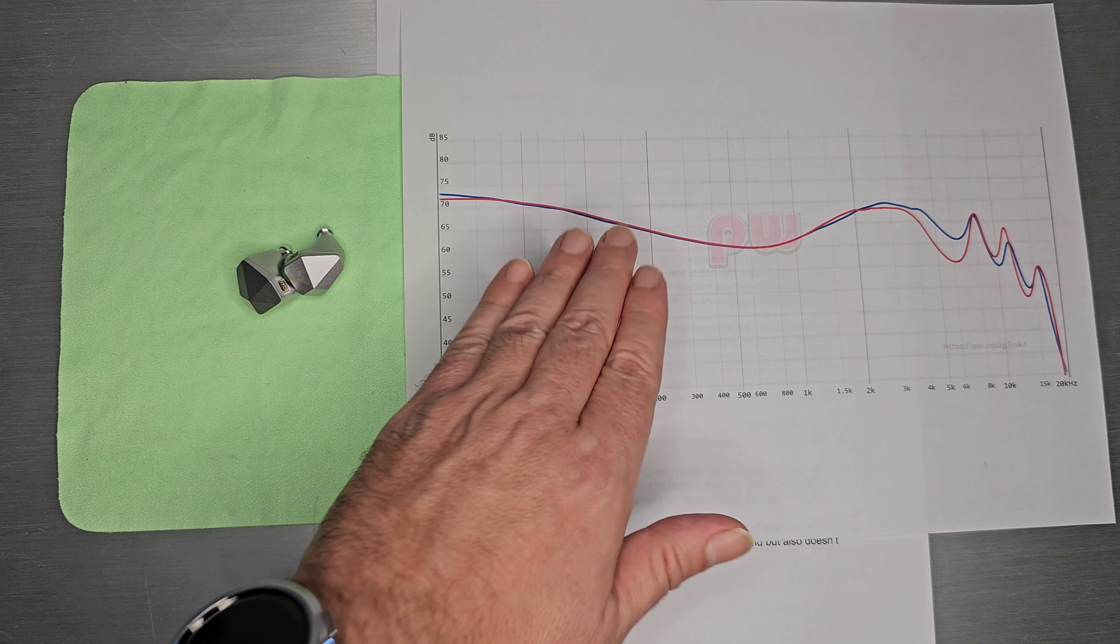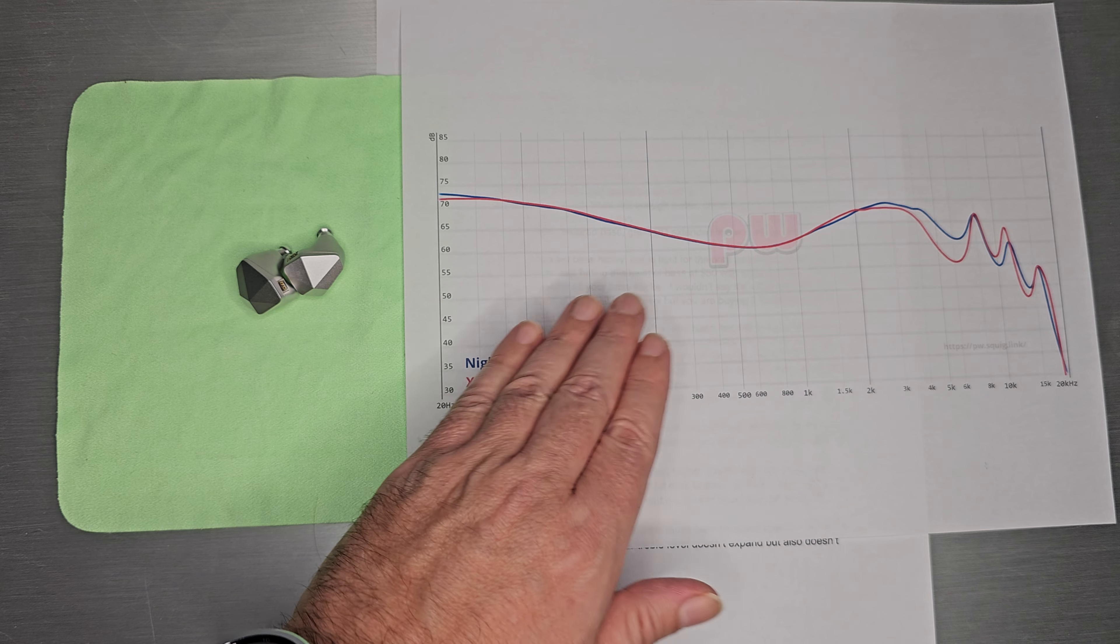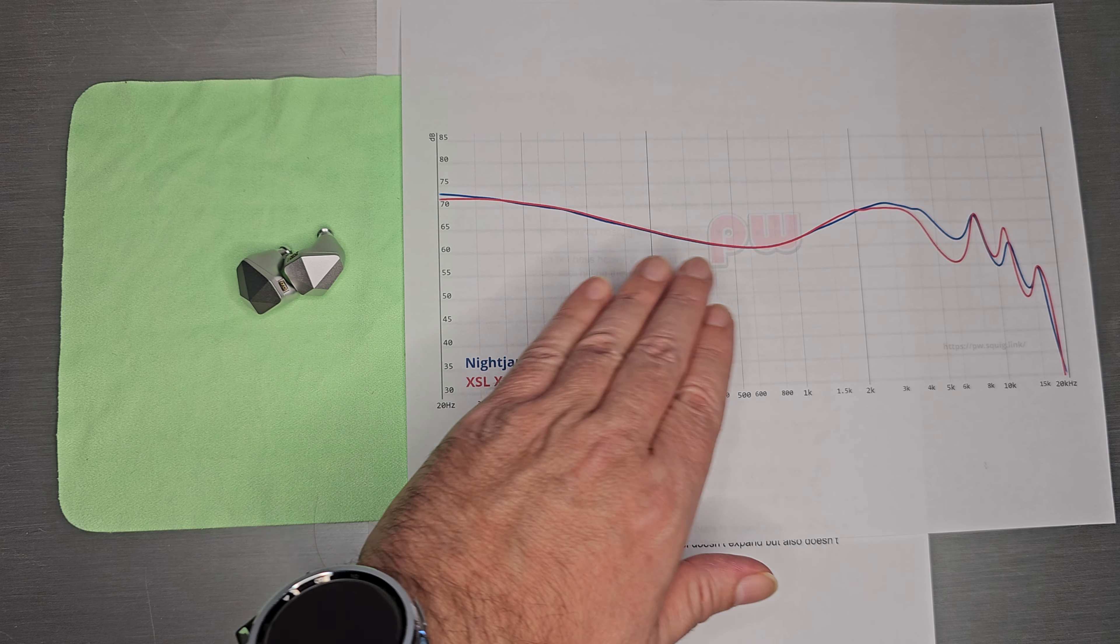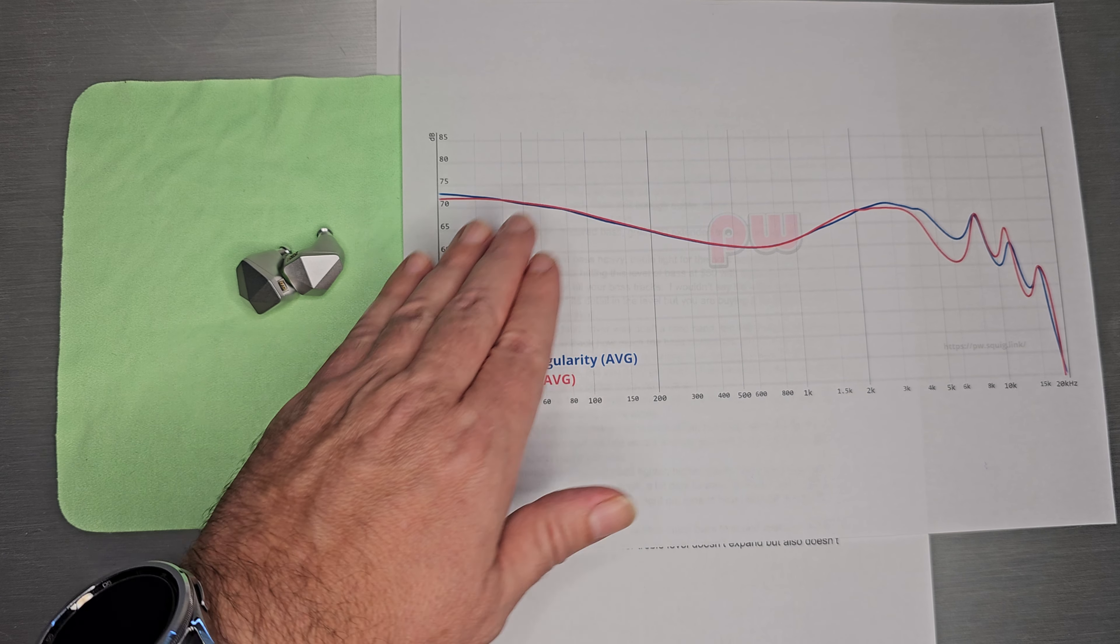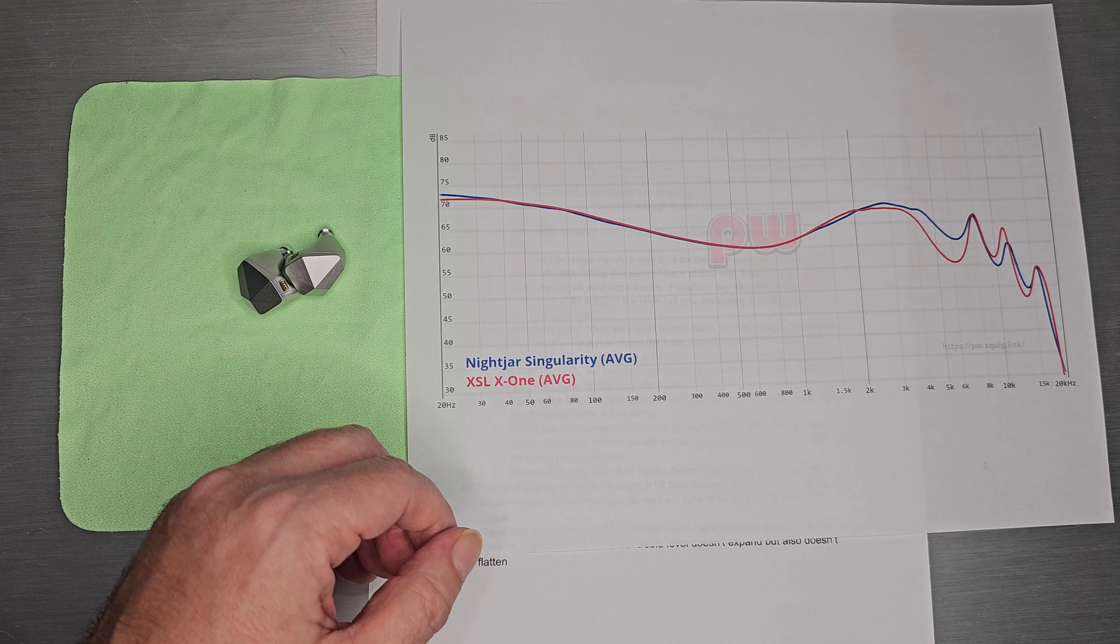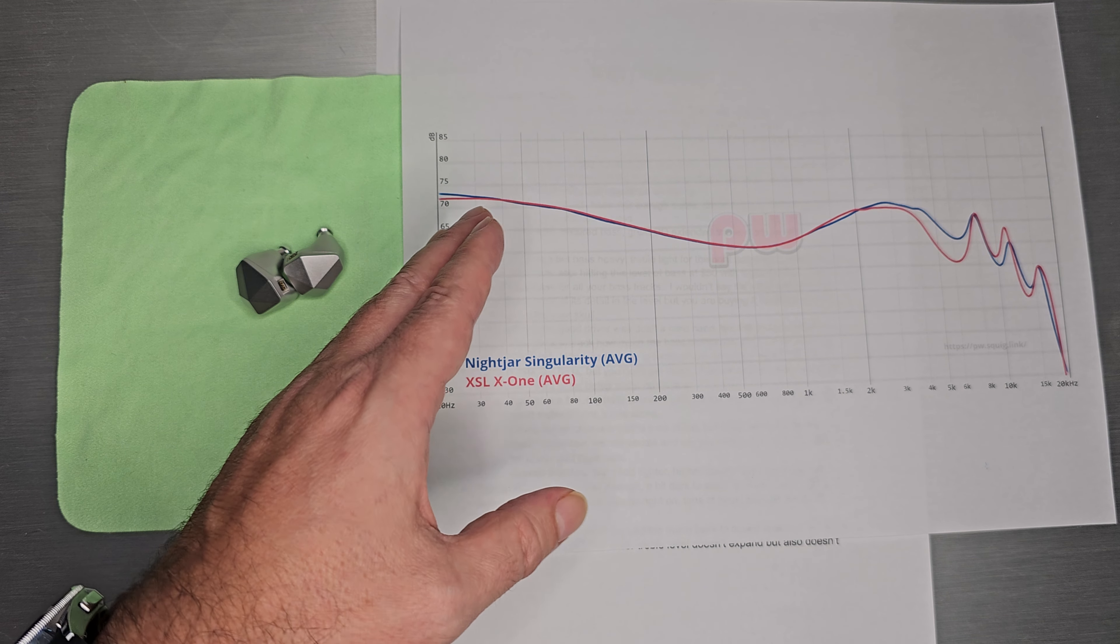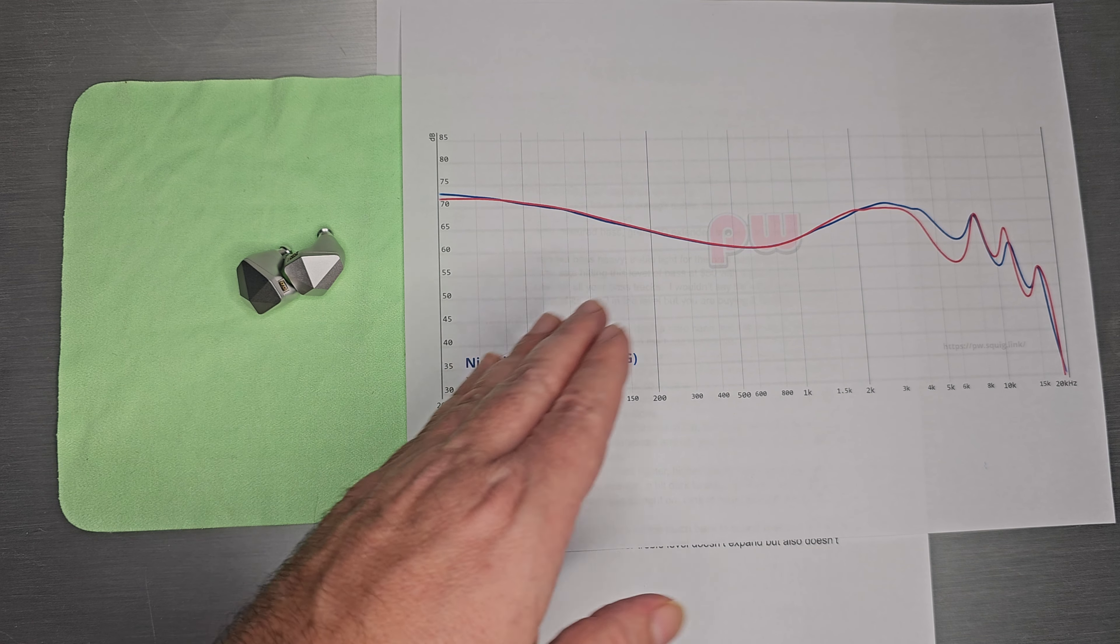XSL-X1 is exactly what you think it sounds like in a sub $100 IEM with a bass shelf that looks like that. It's a huge, booming, very fun sounding bass. Every ounce of boom that you think is there is there in the X-1 and that is why I like it.